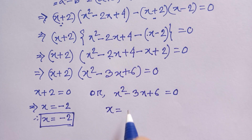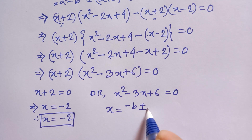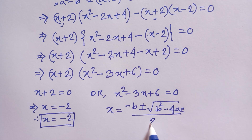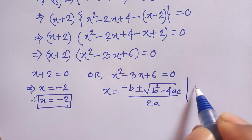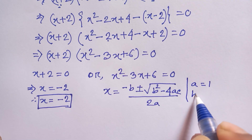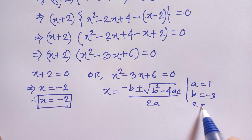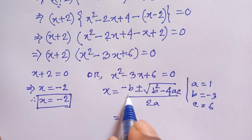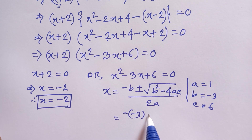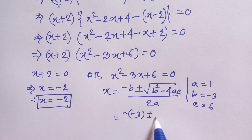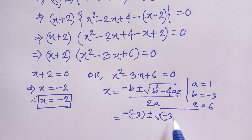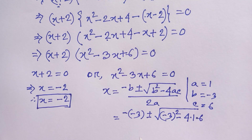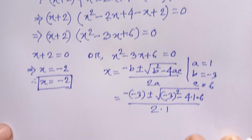Using the quadratic formula, x equals minus b plus or minus the square root of b squared minus 4ac, divided by 2a. Here a equals 1, b equals minus 3, and c equals 6. Substituting these values: x equals minus (minus 3) plus or minus the square root of (minus 3) squared minus 4 times 1 times 6, divided by 2 times 1.